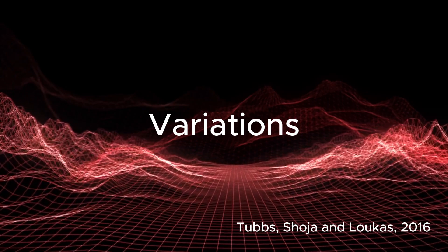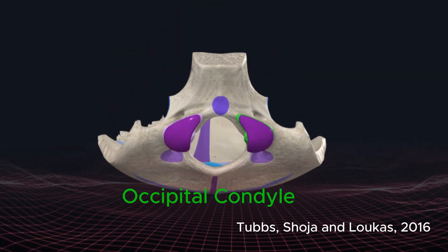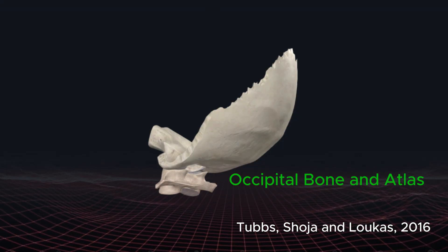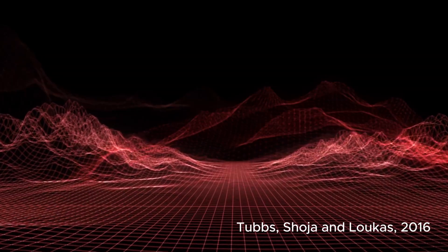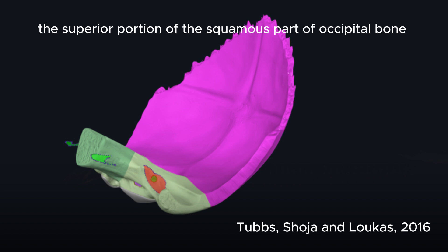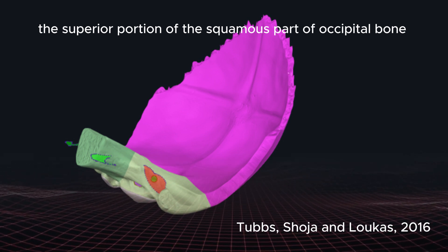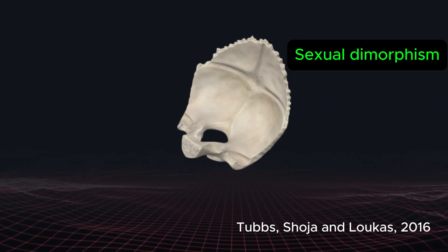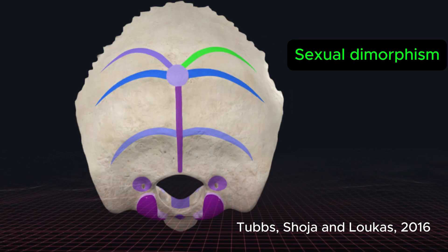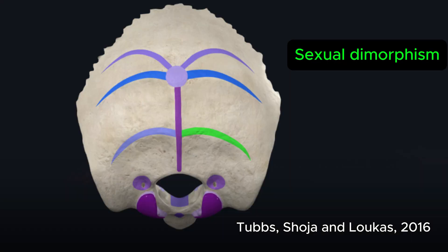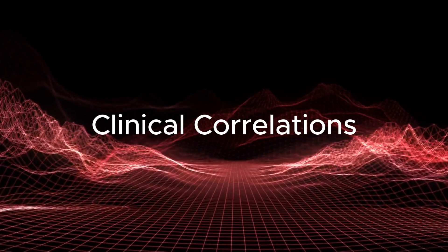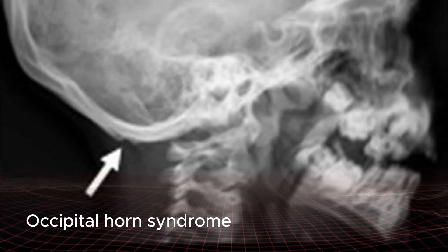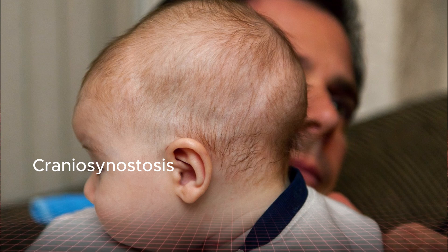Variations: in some individuals a third occipital condyle may be present. The occipital bone may be fused with the atlas, known as atlantooccipital assimilation. The superior portion of the squamous part may fail to fuse, resulting in the presence of an interparietal bone (inca bone). The occipital bone also displays sexual dimorphism, where the nuchal lines and external occipital protuberance tend to be heavier in males than females. Clinical correlates include: fracture of the occipital bone, occipital horn syndrome, and craniosynostosis.